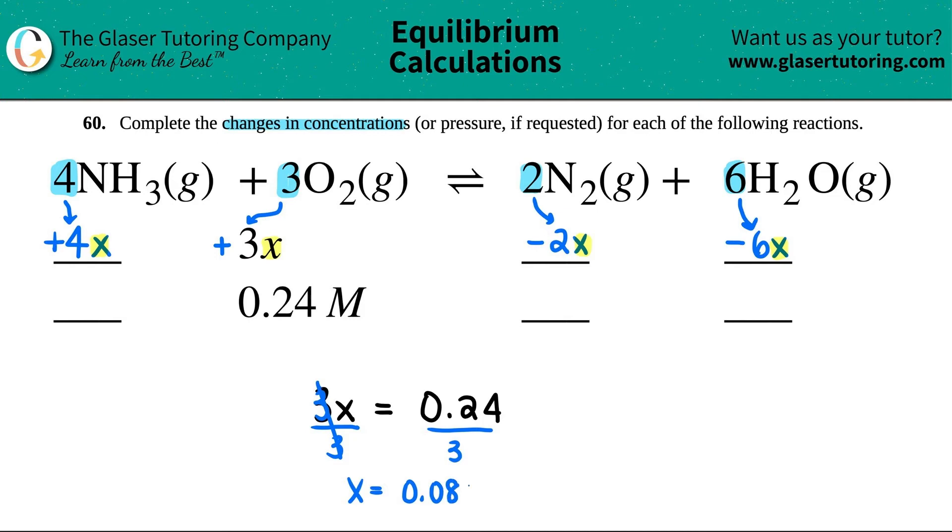If you wanted to add a sig fig here, you would just add one at the end. I'll do that for the actual answers. But now we know what a single X value is. Now for the NH3, we're going up by four times that number. So we would just have to do four times 0.08. And this one would be two times 0.08. And this would be six times 0.08. Keep in mind, these are coming down, so they're decreasing minus this would be increasing.